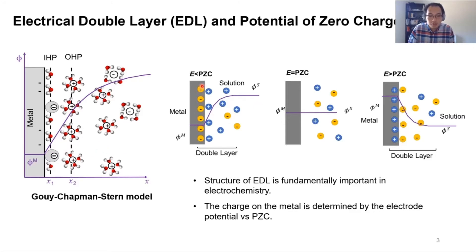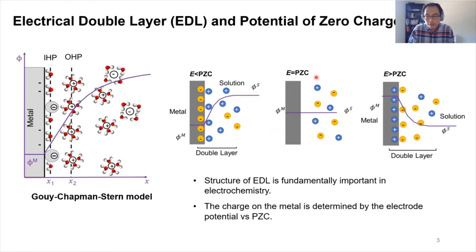The exact charge on the metal surface depends on two things: one is the electrode potential we apply, and the second is the PZC value of that metal. If the potential is more negative than the PZC, or potential of zero charge, then the metal is going to be negatively charged and will attract cations, and vice versa. If the applied electrical potential is more positive than the PZC, the metal is going to be positively charged. Therefore, the PZC is critical in the electrical double layer because it determines what the charge is going to be on the metal surface and inside the electrical double layer.